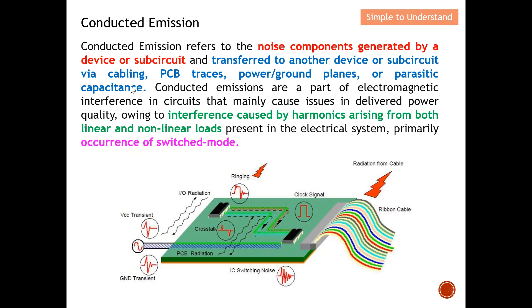Another mechanism is via parasitic capacitance. Imagine a noise source with a capacitive coupling effect — the noise couples onto a ribbon cable and continues to propagate within the conductor of that ribbon cable. So whether through a physical PCB trace or through capacitive coupling through the air, as long as the noise stays within the conductor, it is defined as conducted emission.